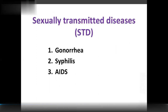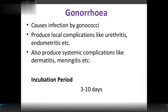Sexually transmitted diseases include gonorrhea, syphilis, and AIDS. First, gonorrhea: the causative organism is gonococci. It produces local complications such as urethritis — inflammation of the urethra.